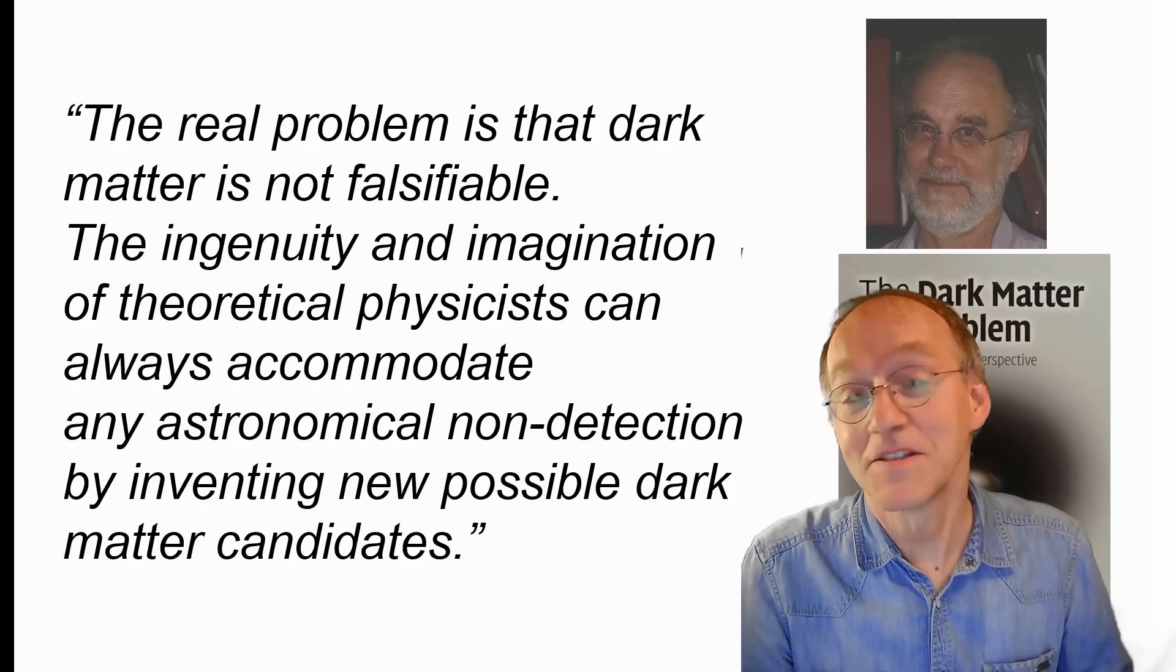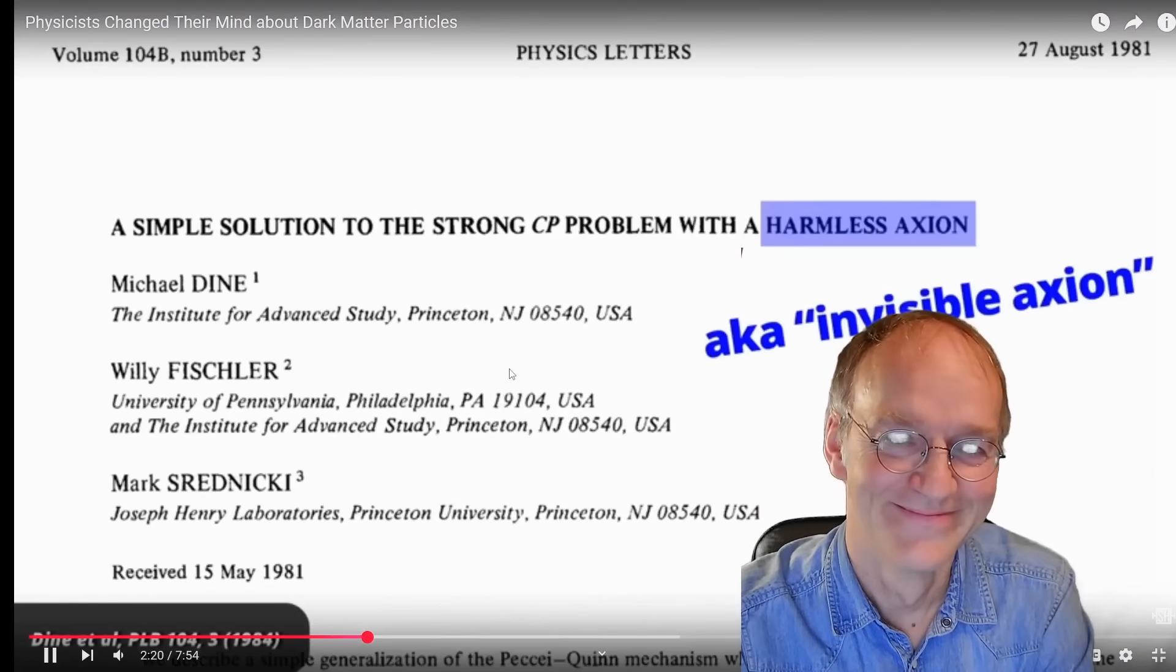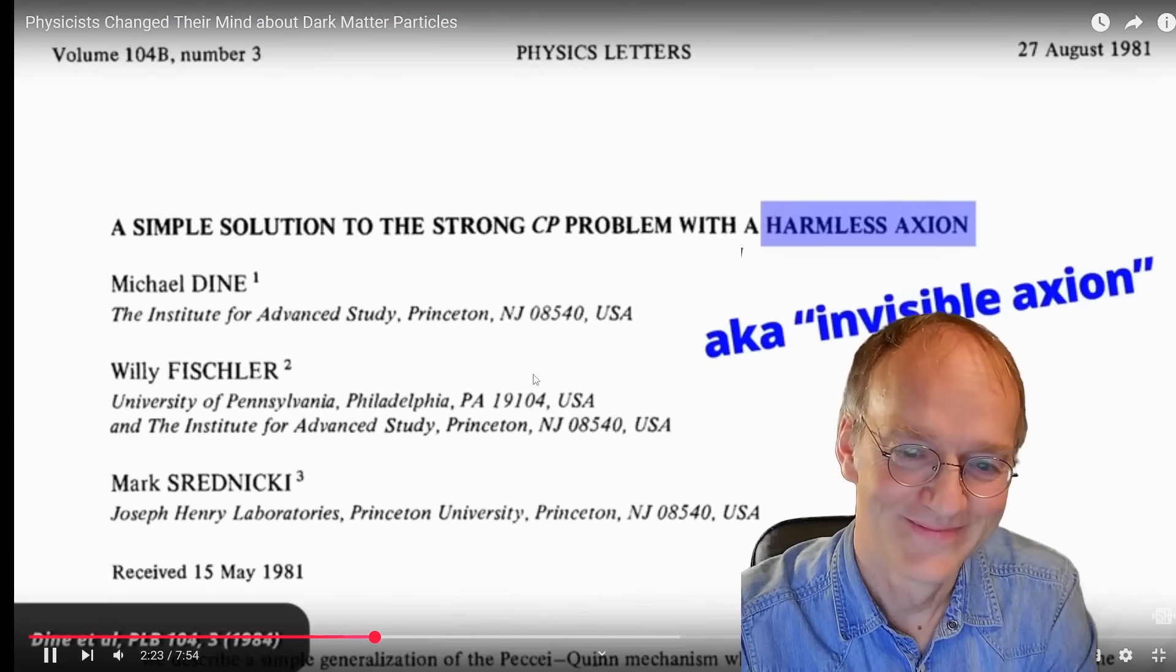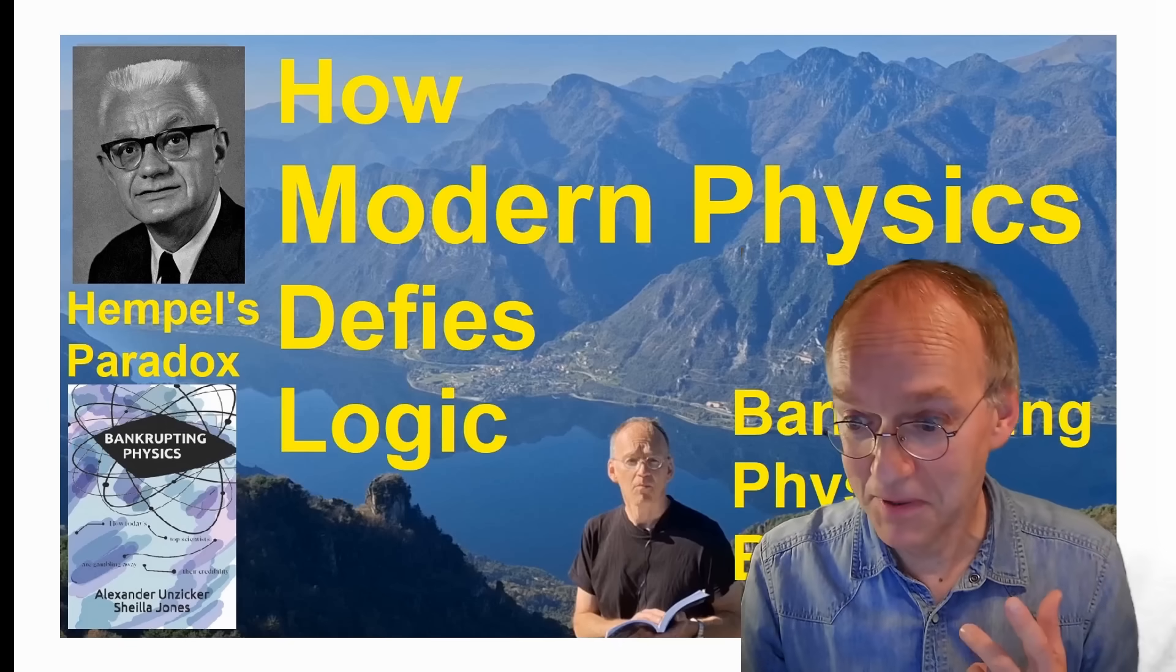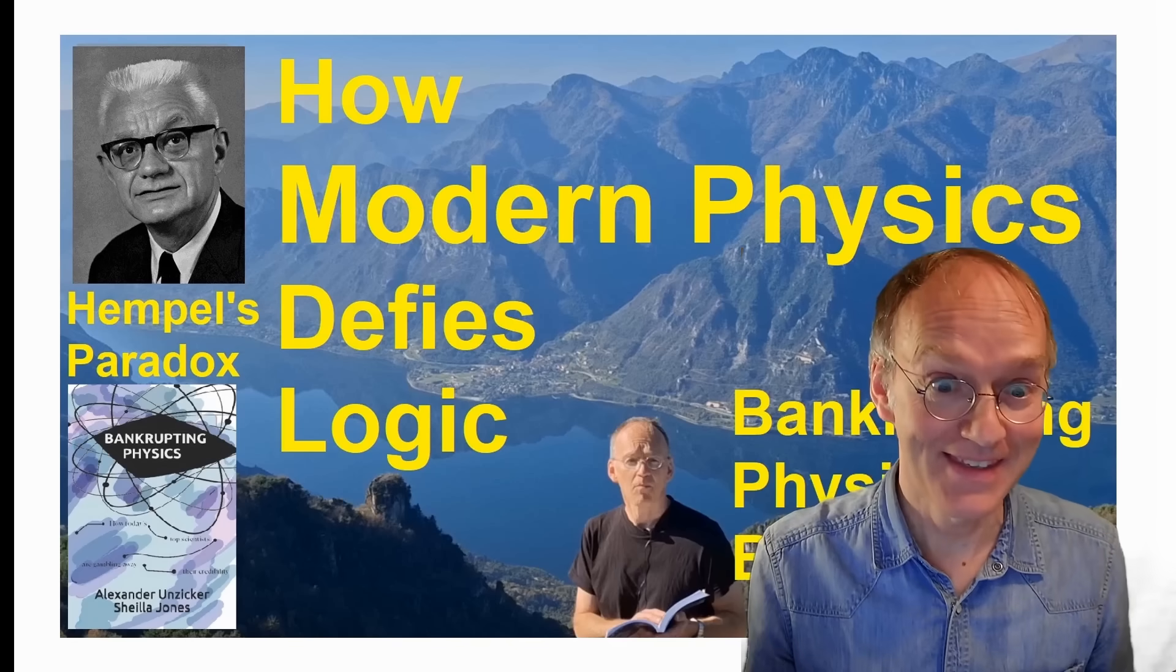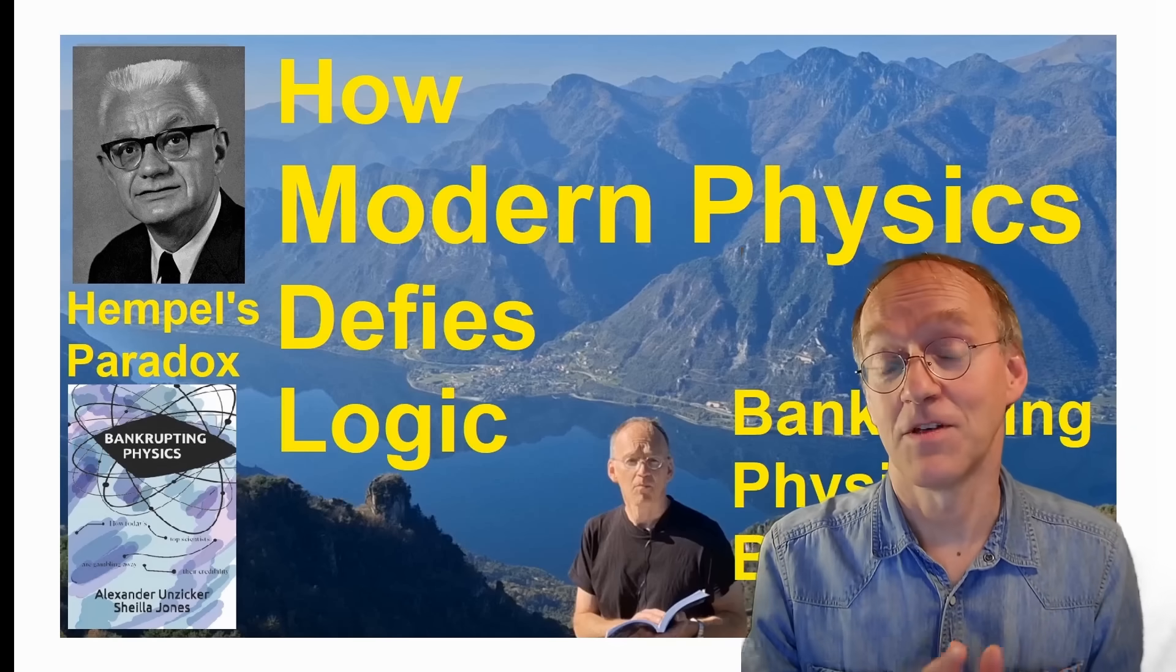The ingenuity and imagination of theoretical physicists can always accommodate any astronomical non-detection by inventing new possible dark matter candidates. This is the problem. Now listen to that recent proposal: new type of axion. It was originally called the harmless axion or invisible axion because it was designed to be compatible with observations. Savor that—it's invisible by definition. And okay, of course you take it for evidence if it's invisible. That's patent nonsense as we see here, but unfortunately that's how modern physics works.